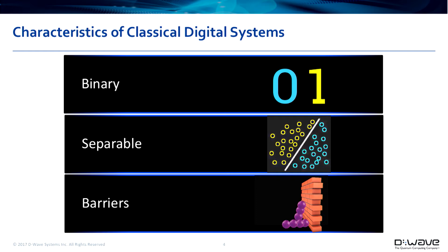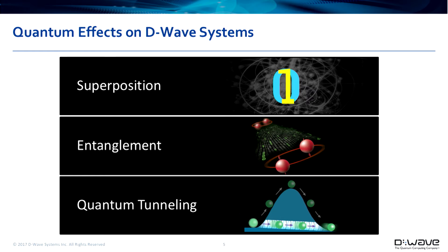If we hit a barrier in a traditional computer — whether on a transistor or doing a search looking for an optimum low point — we have to put more energy into the system to climb over that barrier. In our world, we use three quantum effects. The first of those is superposition, where our bits, which we call qubits, are a zero and a one both simultaneously. They settle out to be a zero or a one at the end of one of our calculation cycles.